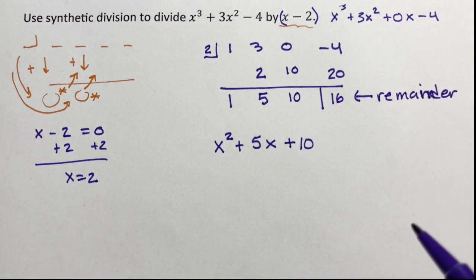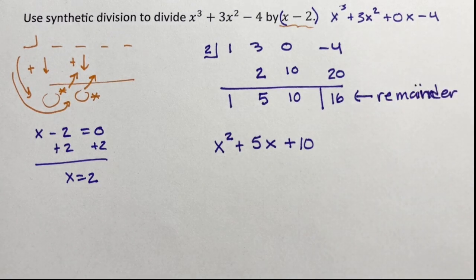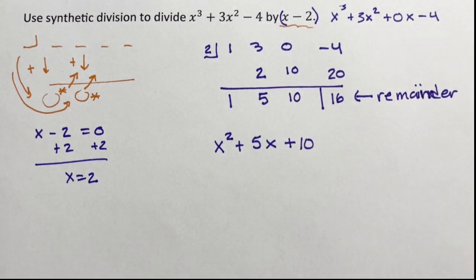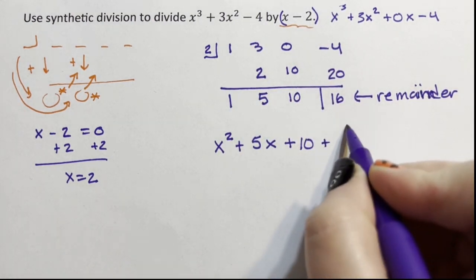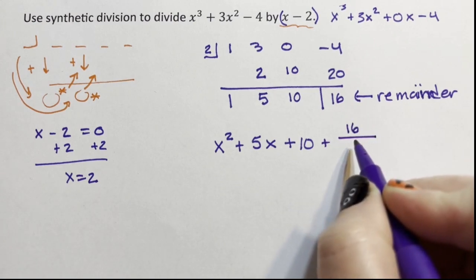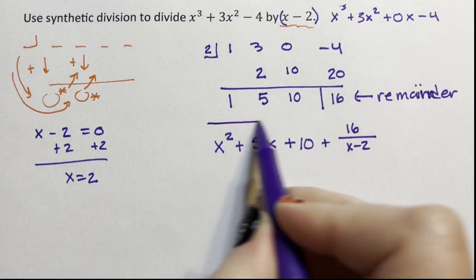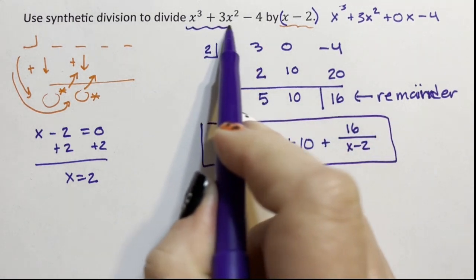Remainder. We have a remainder. And the remainder has to go over what we divide it by. So we have x squared plus 5x plus 10 plus 16 over x minus 2. And this becomes the solution to this divided by this.